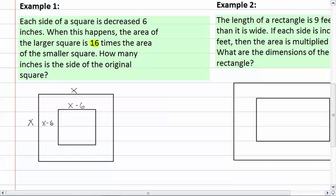Now the area of our larger rectangle is going to be x squared. And then the area of our smaller rectangle is going to be x minus six quantity squared.